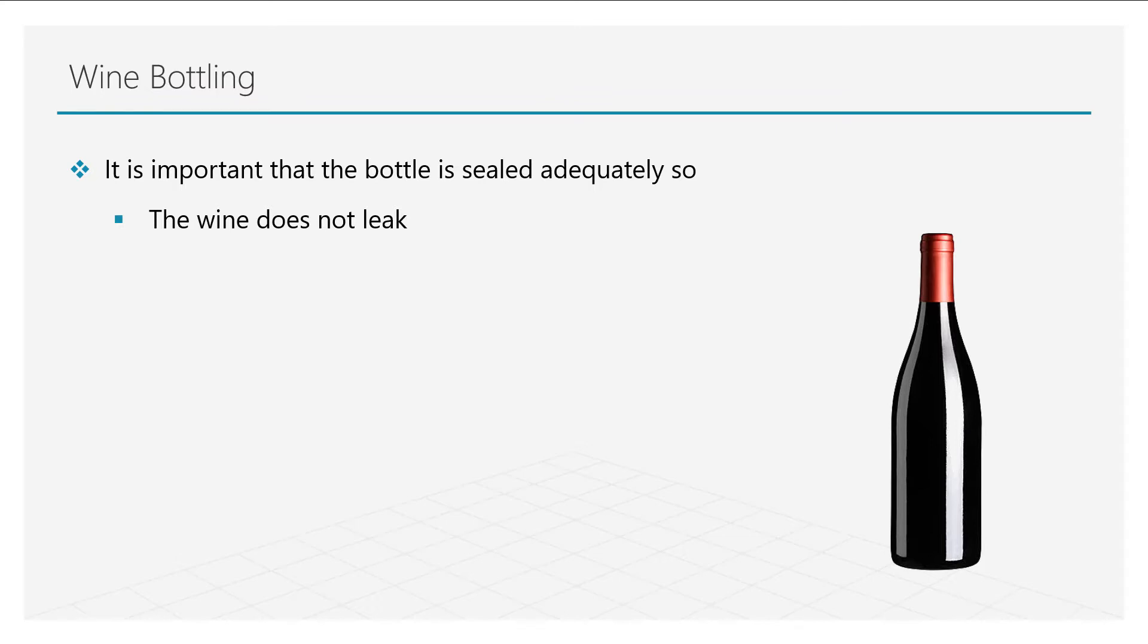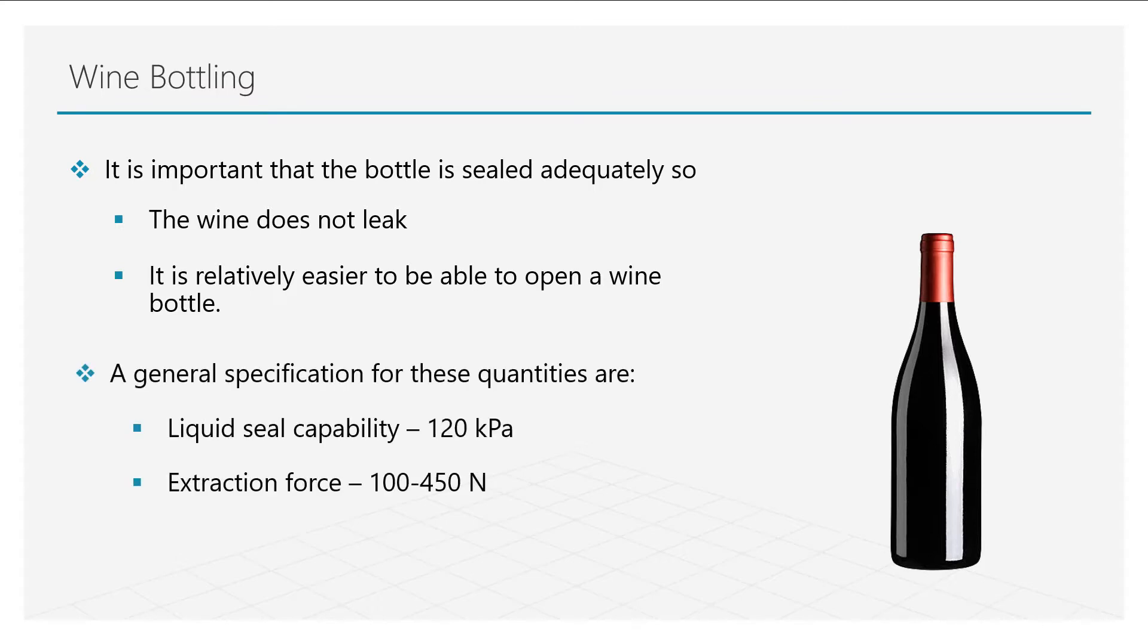And the second one is the bottle is not over-sealed so the wine stopper can still be removed with relative ease. A general recommendation to achieve these two states is that the liquid seal pressure is at least 120 kilopascals and the extraction force, which is the force required to extract the wine stopper, is between 100 to 450 newtons.